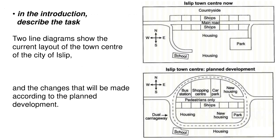Now in the introduction, describe the task. Two line diagrams show the current layout of the town center of the city of Islip and the changes that will be made according to the planned development.